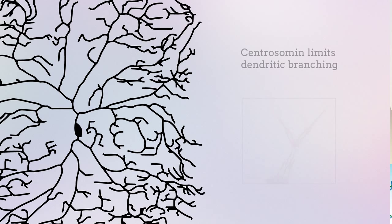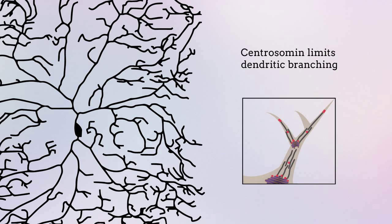Taken together, these findings reveal that centrosomin limits dendritic branching during neuronal development by inhibiting the formation of stabilizing microtubules in newly formed dendrites.